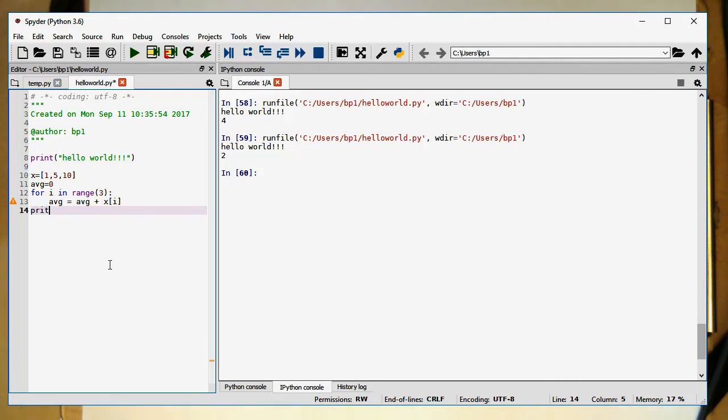And now I just would like to print this out. The result. Print of avg divided by 3. Okay, so let's just save this and run it. And that's our average number here.